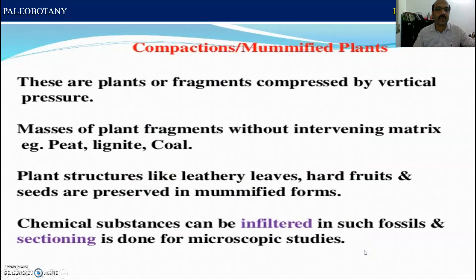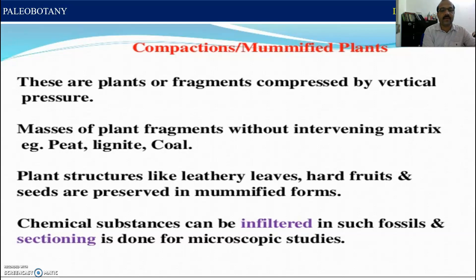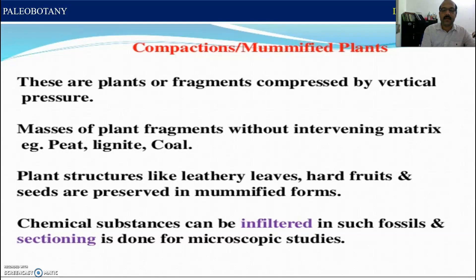Another type is called compaction, that is mummified plant. These are plants or fragments compressed by vertical pressure. Masses of plant fragments without intervening matrix, e.g., peat, lignite, coal, etc., are present. Plant structures like leathery leaves, hard fruits, and seeds are preserved in mummified form. Chemical substances can be infiltrated in such fossils, and sectioning is done for microscopic studies.